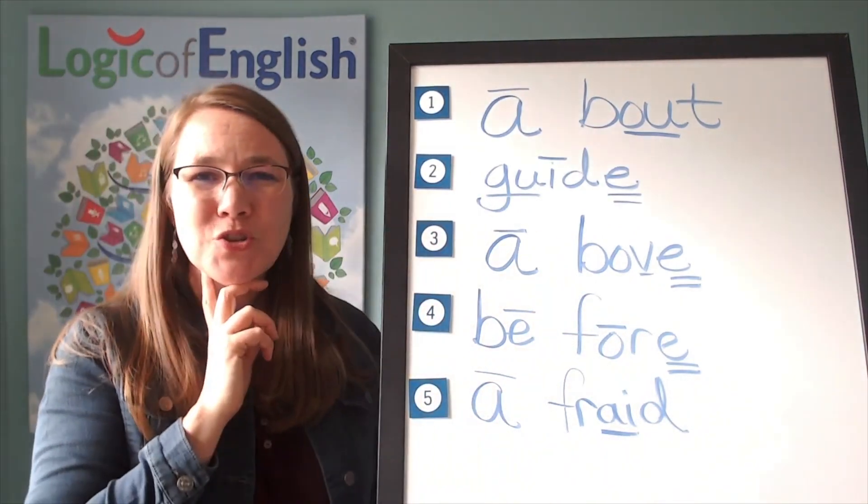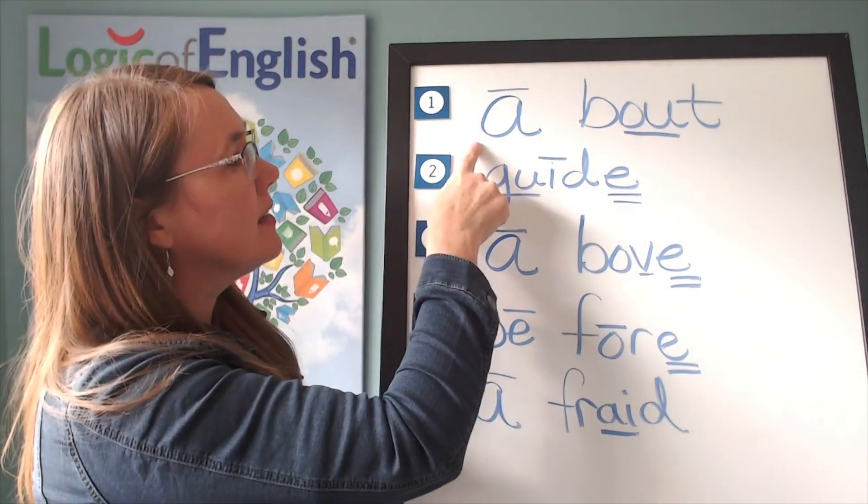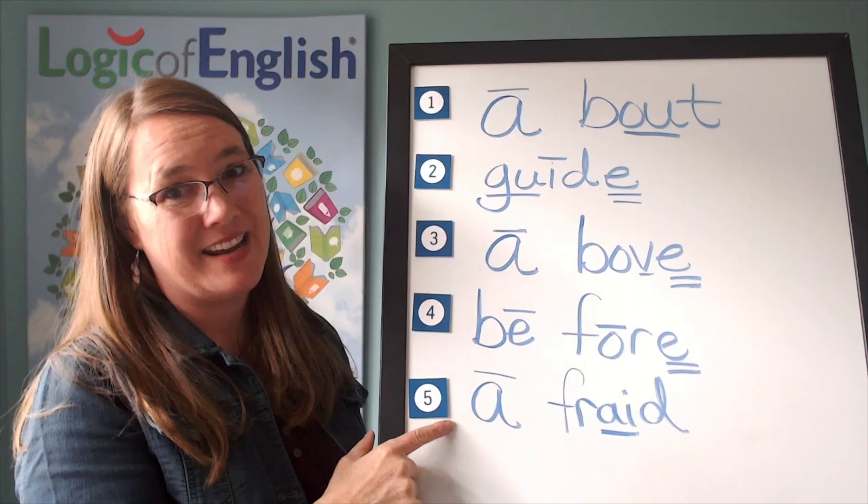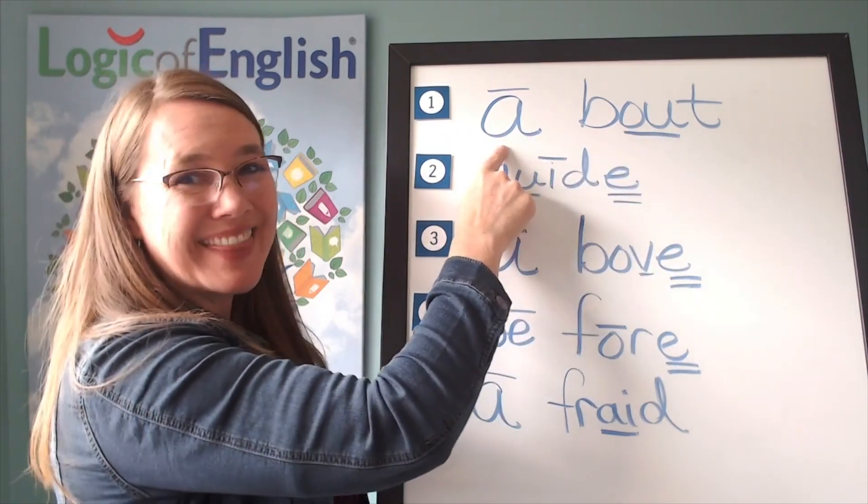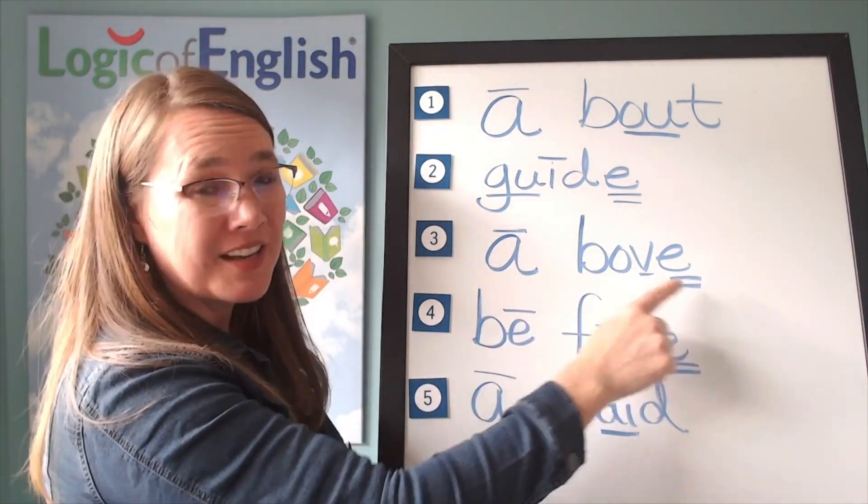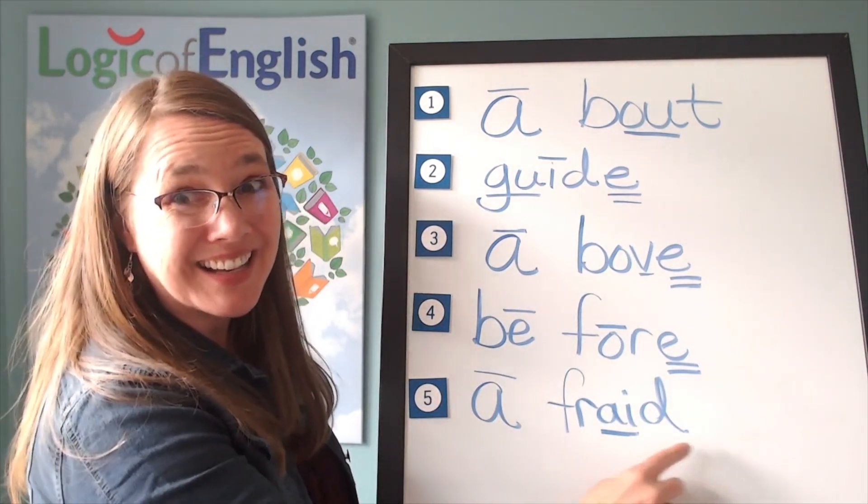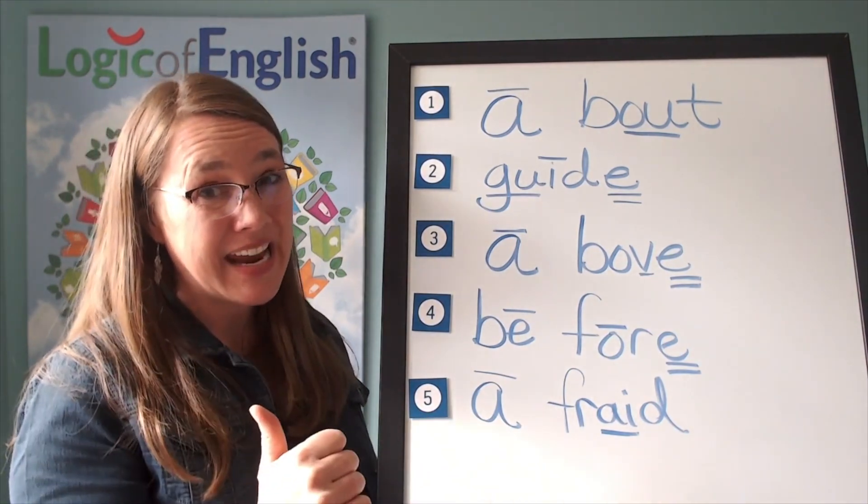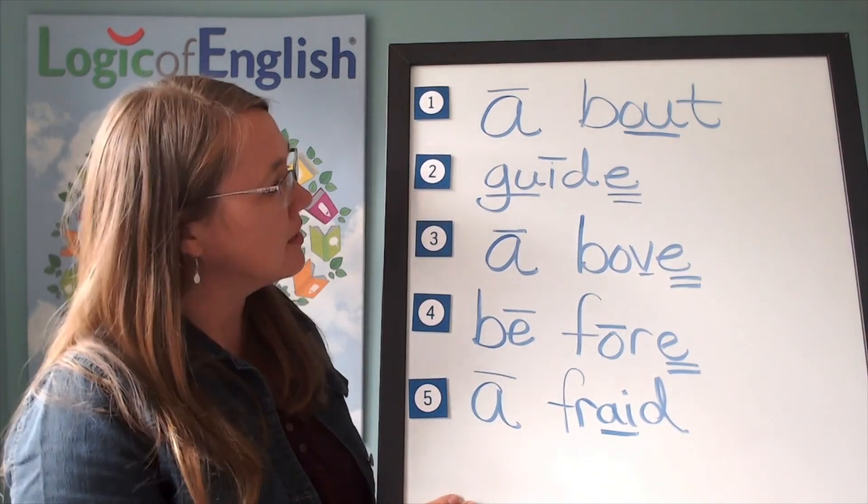If you look at all these words, do you see any words that have something in common? I do too. This one starts in an A. And this one starts in an A. And this one starts in an A. And let's read each of those. A, B, out, about. Look at that. It said its lazy sound. A, B, out, above. It said its lazy sound again. A, F, R, A, D. Afraid. And there it is again. It's really common when a word starts with just the sound A or just an A that that is going to be a lazy sound right there. So just something to notice.